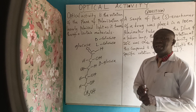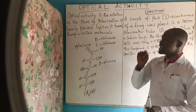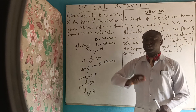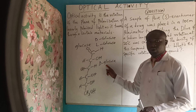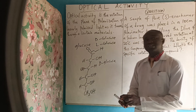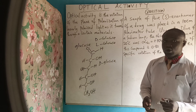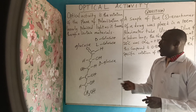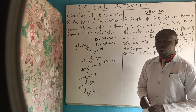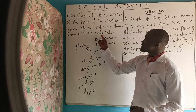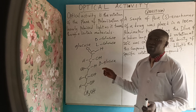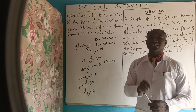D-glucose is called dextrorotatory glucose and L-glucose is called levorotatory glucose. That means when polarized light goes through D-glucose, this molecule has what it takes to rotate the light to the right. If it rotates light to the left, you call it L-glucose. Any molecule that has the tendency to rotate a light ray must have chiral centers.